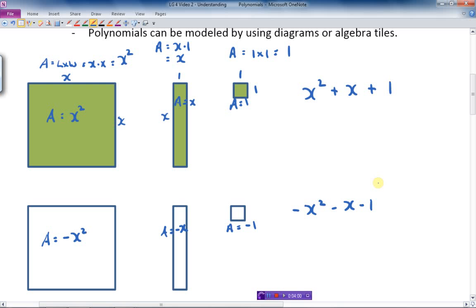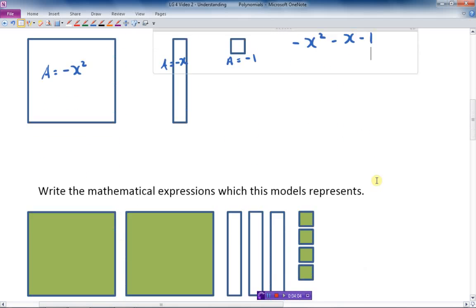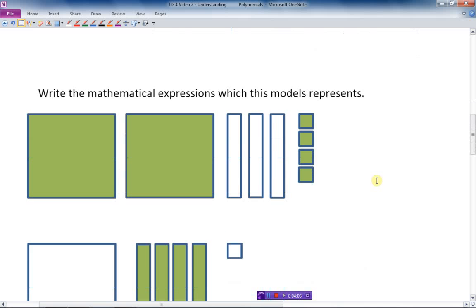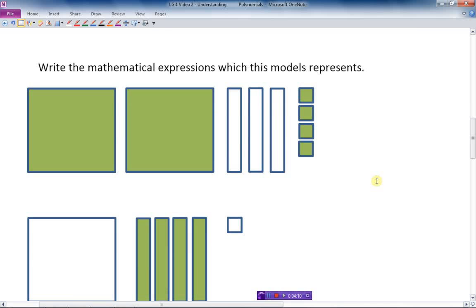Well, let's take what we've just modeled here and go down below. Write the mathematical expressions which these models represent. Well, this is an x squared. This is another x squared. So that would be 2x squared. This is a minus x, another minus x, another minus x. So that's minus 3x.